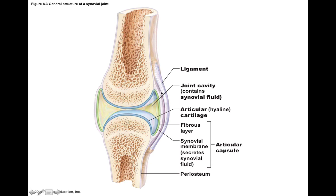The joint cavity is surrounded by the articular capsule, which goes all the way around the joint to hold the synovial fluid in place. There are two layers: the fibrous layer, which is a dense irregular connective tissue, and the synovial layer, made of synovial membrane — a connective tissue membrane that takes blood plasma and filters it to make synovial fluid, which fills the joint cavity. Synovial fluid is a viscous, slippery solution containing mostly water, electrolytes, and hyaluronic acid, with little protein or cells.